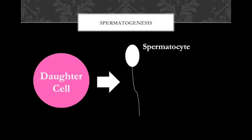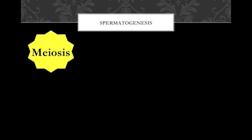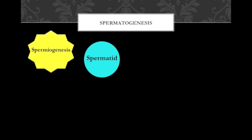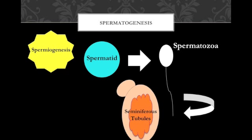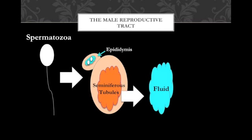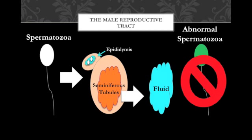Daughter cells develop into spermatocytes which undergo the second process, meiosis. Meiosis is involved in the production of gametes or reproductive cells. Immature gametes called spermatids are the result of meiotic divisions in the seminiferous tubules. In spermiogenesis, the third and final process, unspecialized spermatids develop into mature spermatozoa. Spermatozoa enter the fluid in the lumen of the seminiferous tubules. Once the spermatozoa enter the epididymis, the composition of the fluid produced by the seminiferous tubules is adjusted in order to dispose of damaged or abnormal spermatozoa.